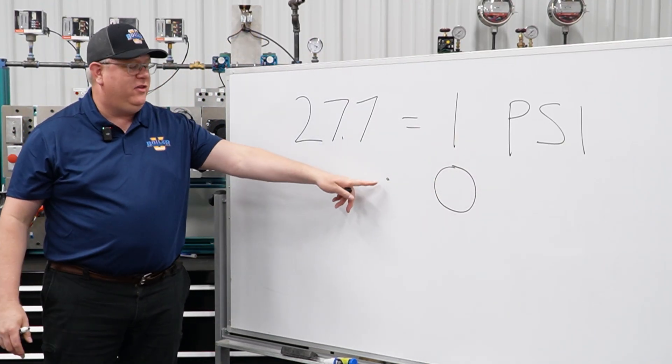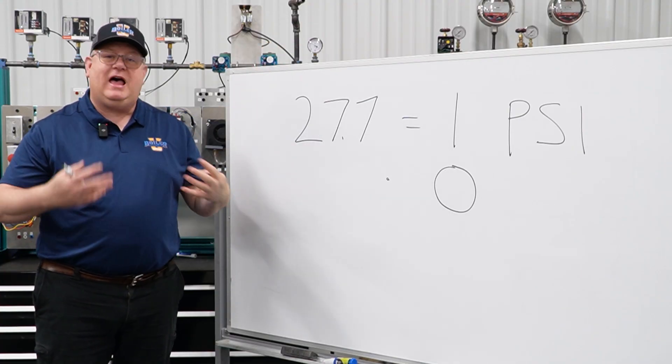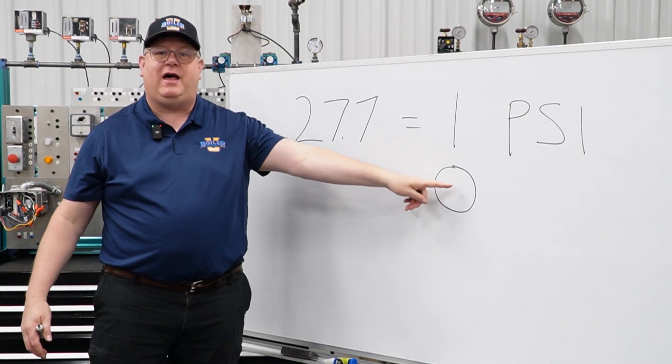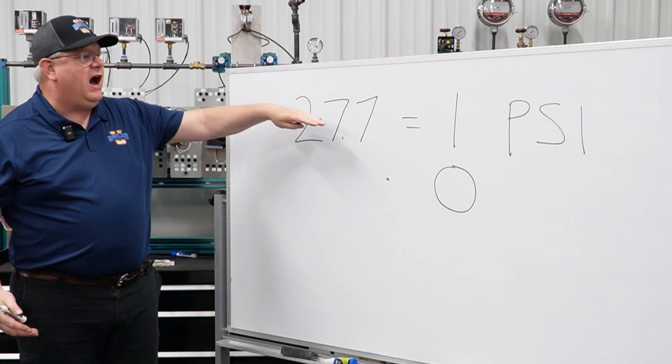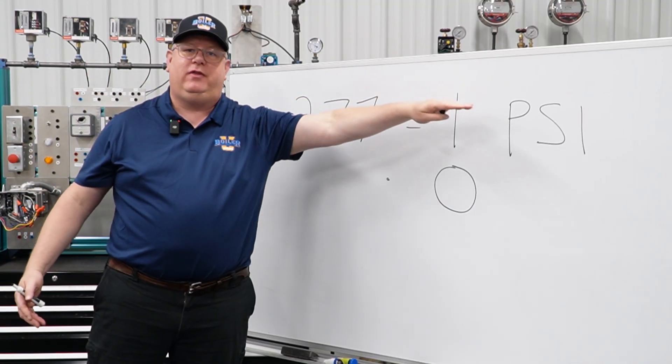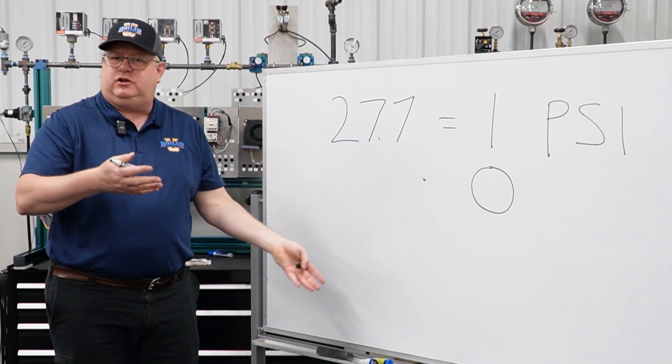So a tube this size holding water is going to weigh a lot less than a piece of pipe that size holding water. So how can the height still give you the same pressure? Because weight converts to pressure, right?